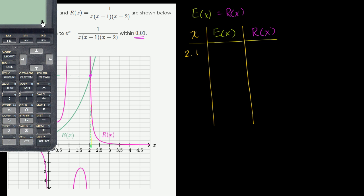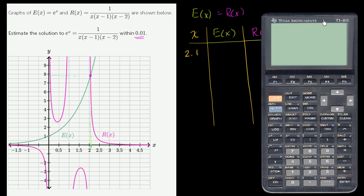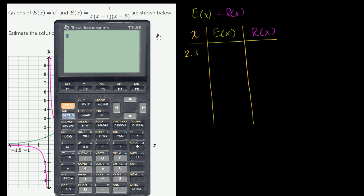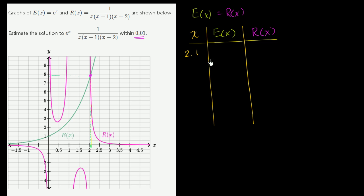When x equals 2.1, e(x) is just e to the x power. So e to the 2.1 power equals 8.166. So let me write that down: 8.166.